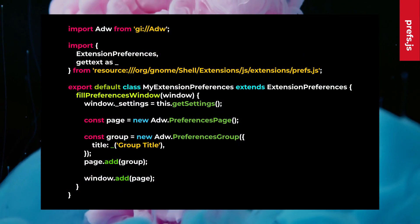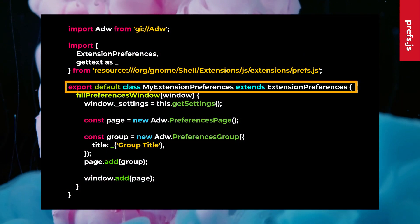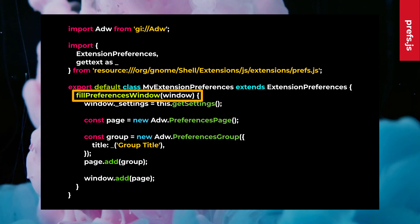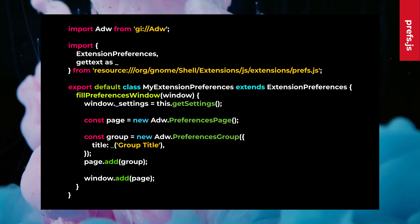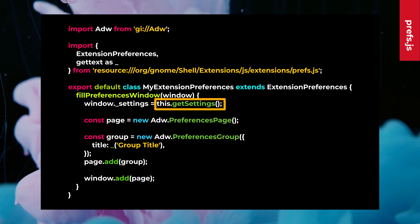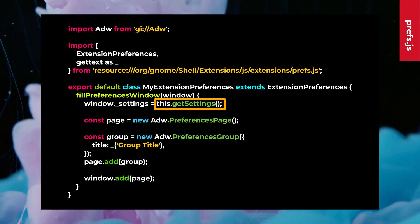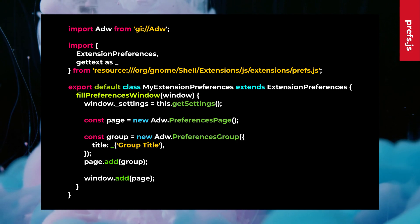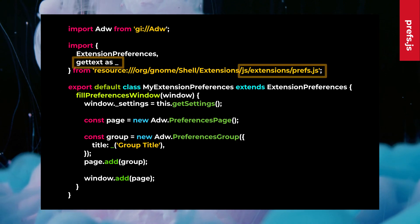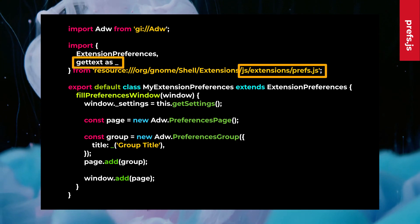Prefs.js must export a default class extending the extension preferences class with a fill preferences window method. All extension-based properties and methods can be used here too. Just like the extension module, the prefs module is also offering translation functions.